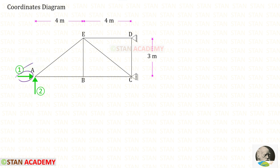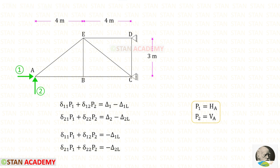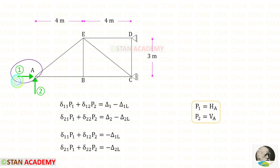In this analysis there are two coordinates: HA and VA, because we removed both of them. Let us keep HA as the first coordinate and VA as the second coordinate. We assume HA is acting towards the right side and VA is acting upwards. If we get a negative answer, our assumption is incorrect and we can change the direction. Since there are two coordinates, we use two compatibility equations. There is no external deflection, so delta 1 and delta 2 will be 0. P1 will be HA and P2 will be VA.